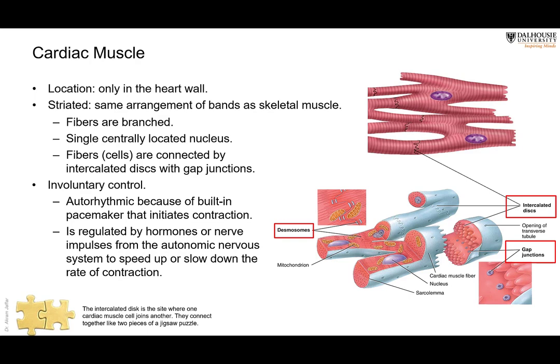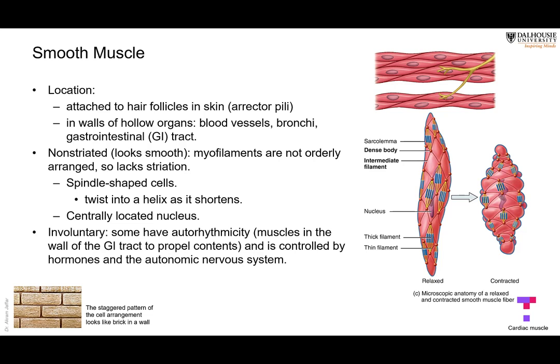Smooth muscles are the third type. We have already met one group in the skin, connected to the hair follicle, causing erection of the hair — called the erector pili muscle. They are also present in the wall of hollow organs like the urinary bladder, ureter, blood vessels, gastrointestinal tract, and respiratory passages. They are non-striated — there are no alternating dark and light bands.